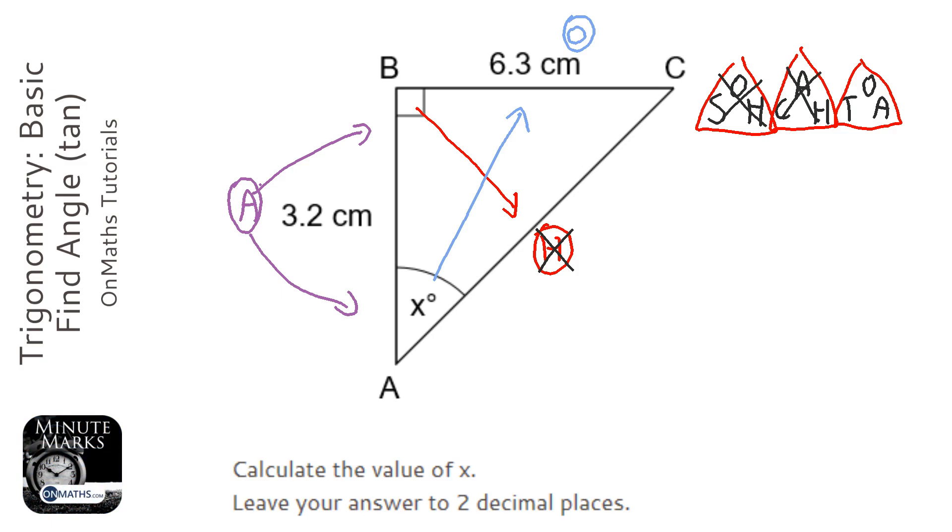Some of you might want to just write tan x equals O over A and solve it that way by substituting. We're going to do a different method—we're going to use the triangle and substitute the values directly.